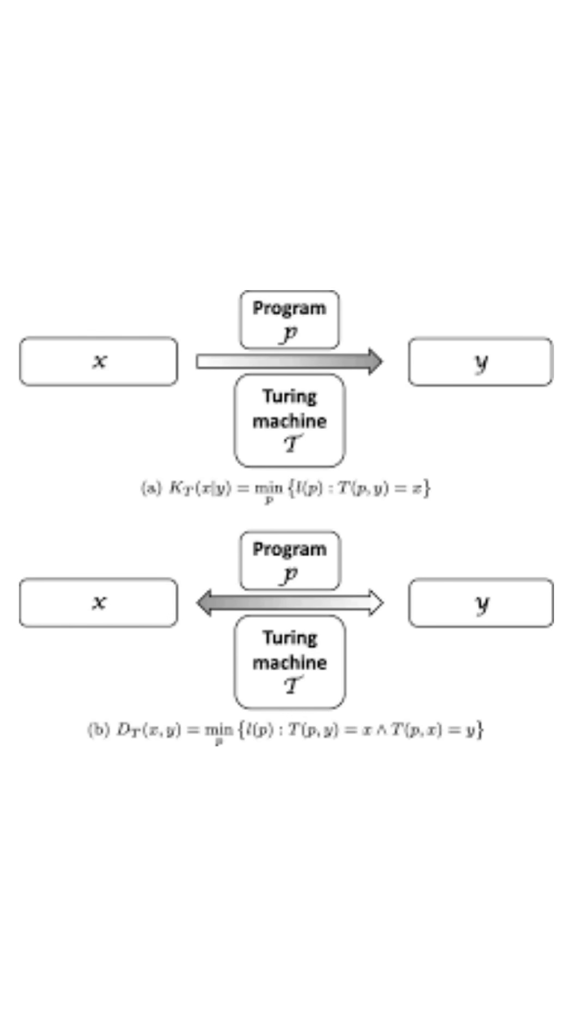Kolmogorov complexity: you think simplicity is overrated, and that anything worth doing should require at least a 50-page proof.